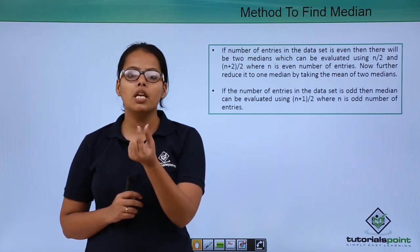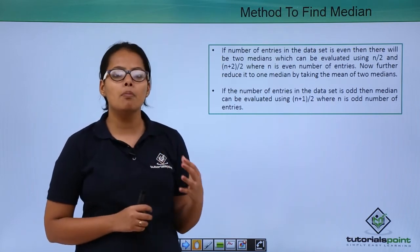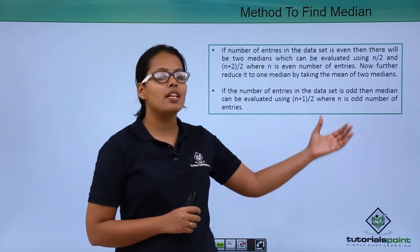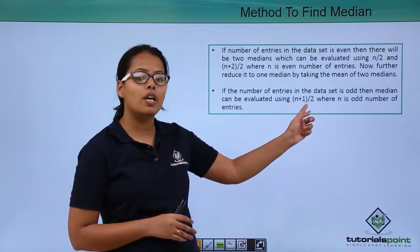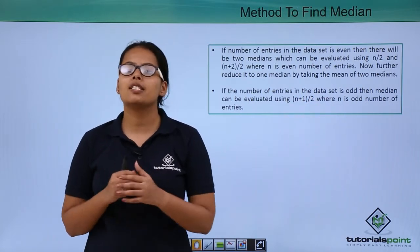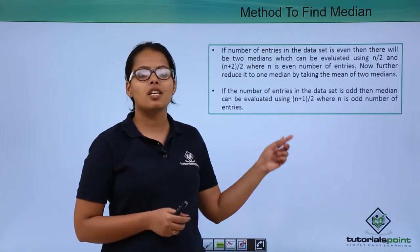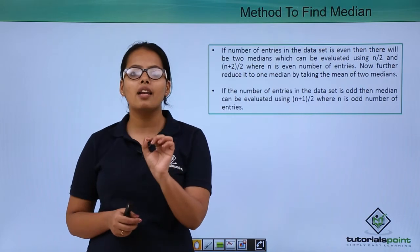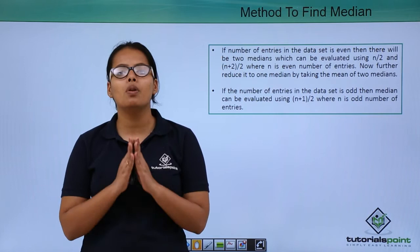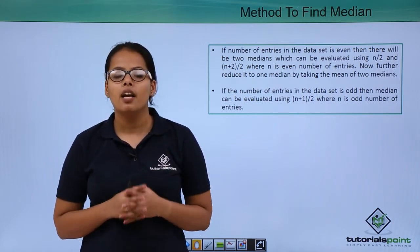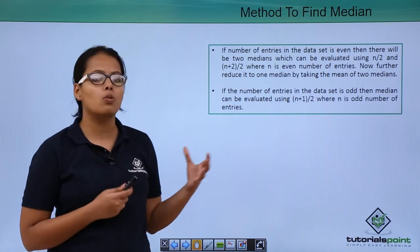So you will take the mean of those two values to find out the median. If the number of entries are odd, the middle value is found using (n+1)/2. If there are 5 entries, 5+1 divided by 2 is 3, so the number at rank 3 after arranging in ascending order will become the median of that dataset.